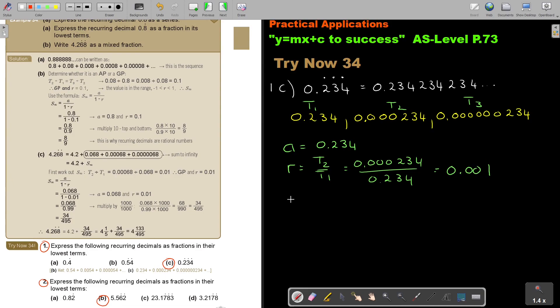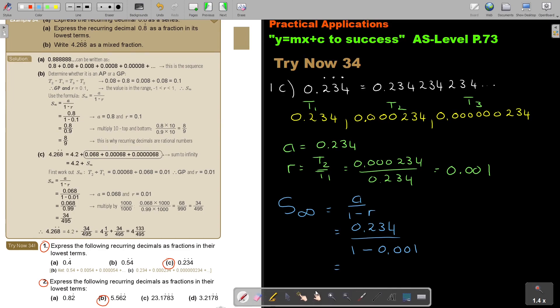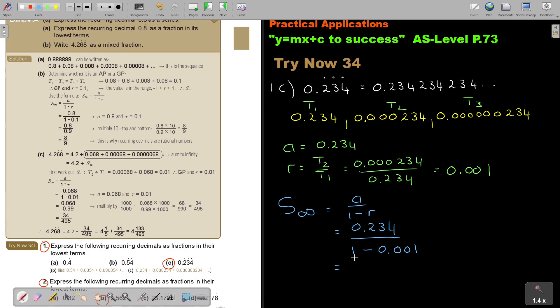Now I'm going to find S to infinity. That's A over 1 minus R. So in the place of A I put 0.234 and then 1 minus 0.001. And if I press that on my calculator, so it's 0.234 divide bracket 1 minus 0.001 close the bracket equals. And then you can just say shift ABC. I prefer. And then directly your calculator will give it to you.